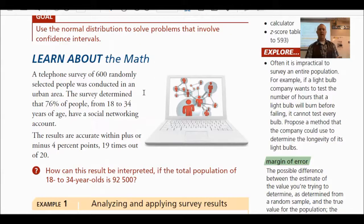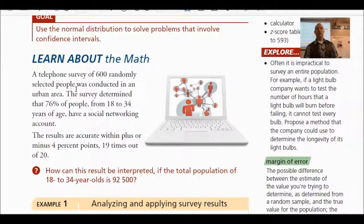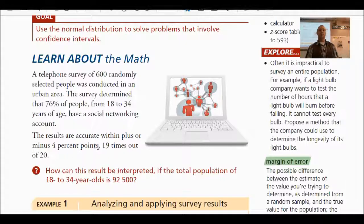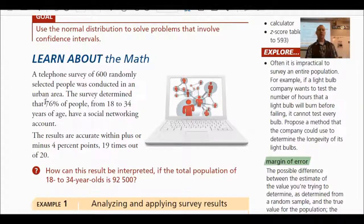In the question it says: a telephone survey of 600 randomly selected people was conducted in an urban area. The survey determined that 76% of people from 18 to 34 years of age have a social networking account. The results are accurate within plus or minus four percentage points, 19 times out of 20.